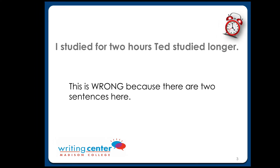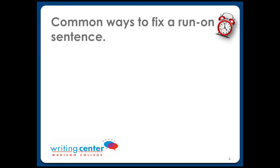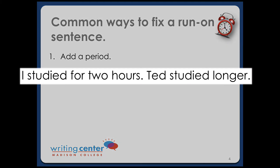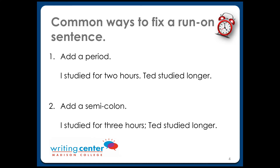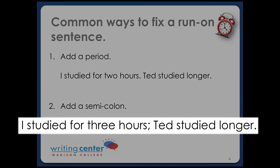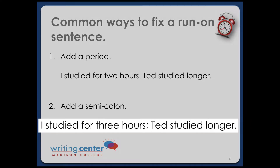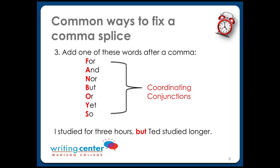Let's look at how we can fix this run-on sentence. There are many ways to fix run-ons; let's look at a few of the most common. The quickest fix is to add a period before you begin with your new subject and action, like you see here. Another option is to use a semicolon, like you see here. Another way is to link the sentences together by adding a comma and a coordinating conjunction. If you list the coordinating conjunctions, their first letters spell the word FANBOYS — that's a great way to remember them.